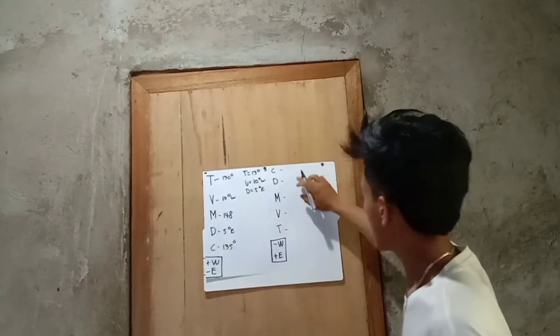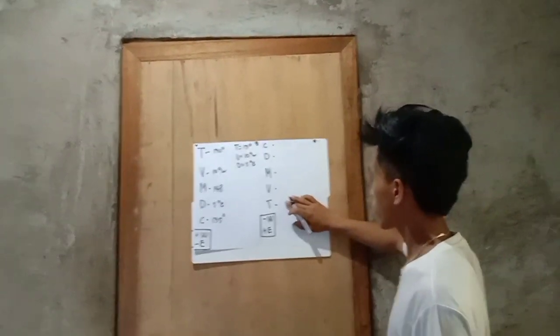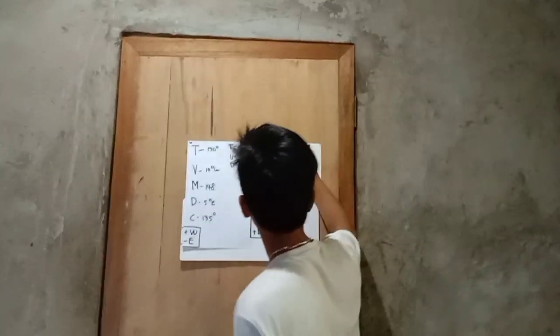Reverse. So, the compass north is the first, and the true course is the last. So, our compass north is 135 degrees.